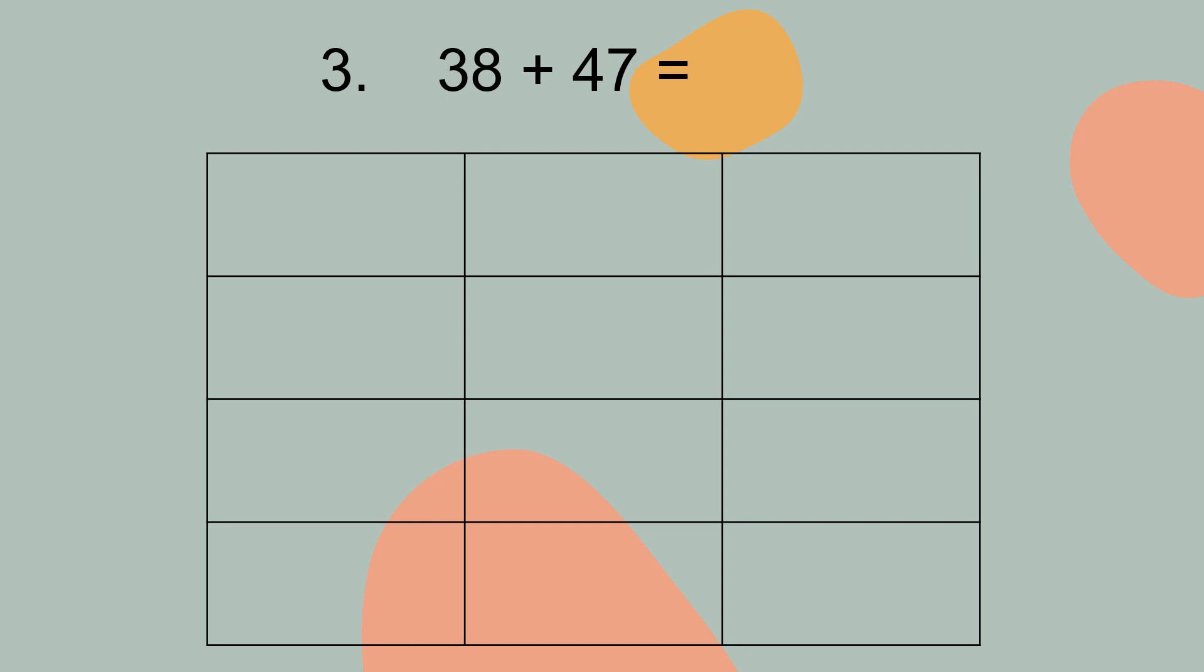Question number 3. 38 plus 47. Now you write down 38 plus 47 equal to. So now you count 8 plus 7 first. You must count 8 plus 7 first. You cannot count 3 plus 4 first.